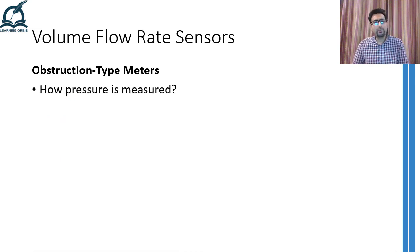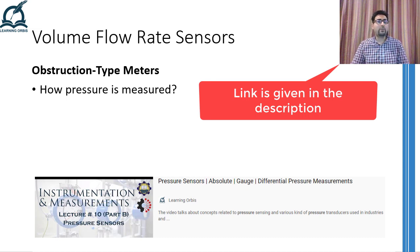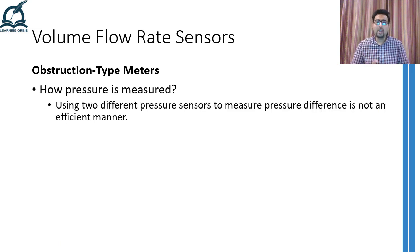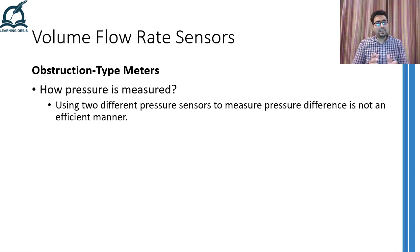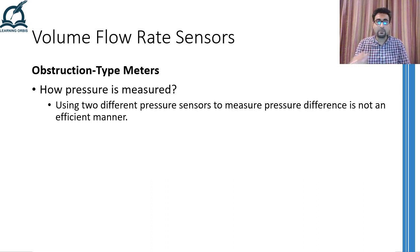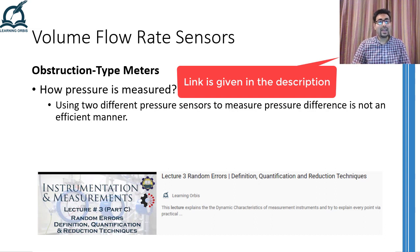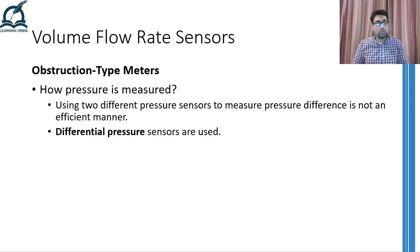The second question is how to measure pressure before and after the obstruction so that the pressure difference can be figured out. I have discussed a range of pressure sensors in the reference video, so you can consult that for details. However, using two separate pressure sensors to measure pressure before and after the obstruction and then calculating the pressure difference is not an efficient way, because measurement errors in both individual sensors will be added up. Therefore, it is highly recommended to use a differential pressure sensor, which is capable of giving you the pressure difference directly.